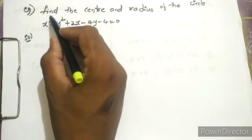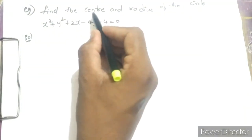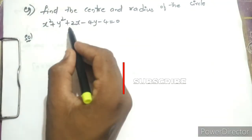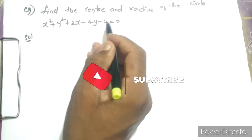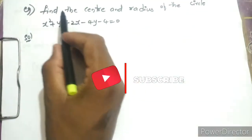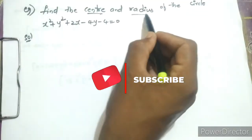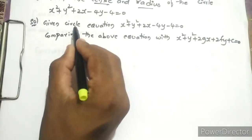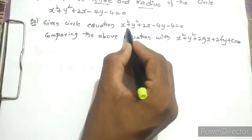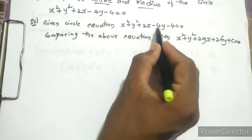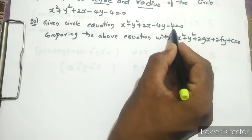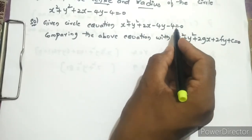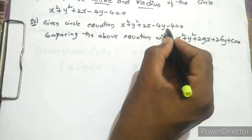Now see the next example: find the center and radius of the circle x² + y² + 2x - 4y - 4 = 0. In this question we have to find the center and radius of the circle. The given circle equation is x² + y² + 2x - 4y - 4 = 0.